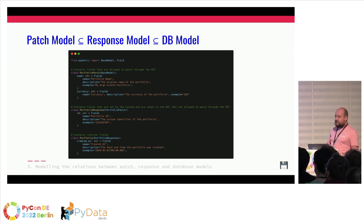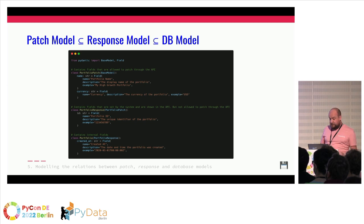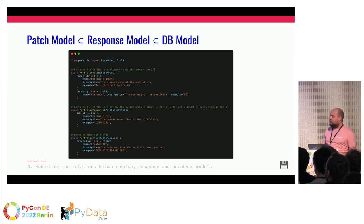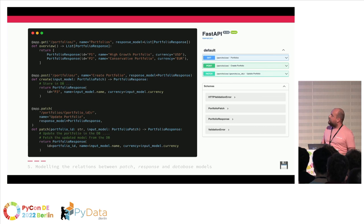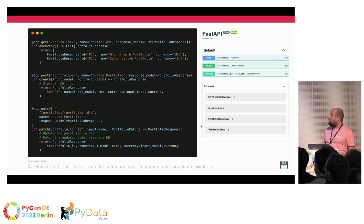We started with the patch model — the lowest level — where we define the fields that people can patch in the API, in this case name and currency. Then the response inherits from patch and adds an ID (the database field ID). Then the database model inherits from portfolio response and adds a field that is purely internal. In this way, we only have to define everything once. We don't have to write complex logic to map database models onto response models — we can just directly use it, and it works fine. All endpoints get generated and documented, sharing the same schema descriptions defined only once.